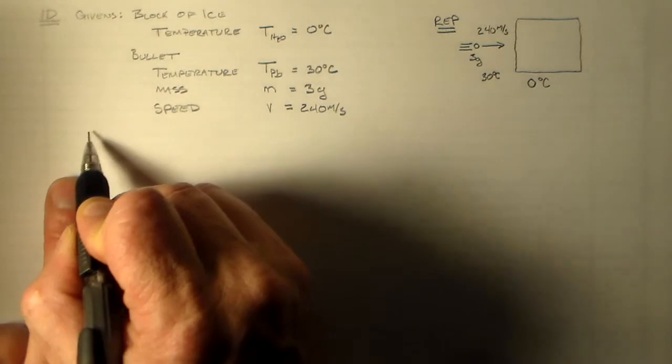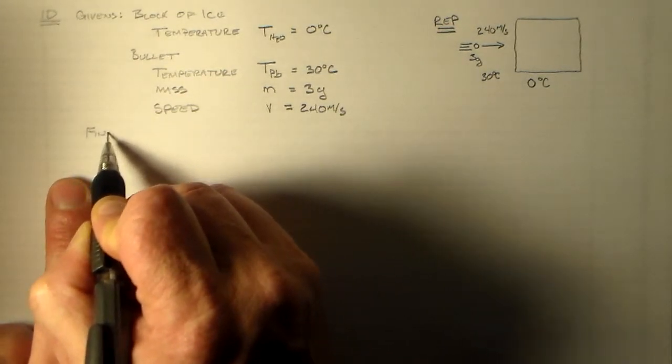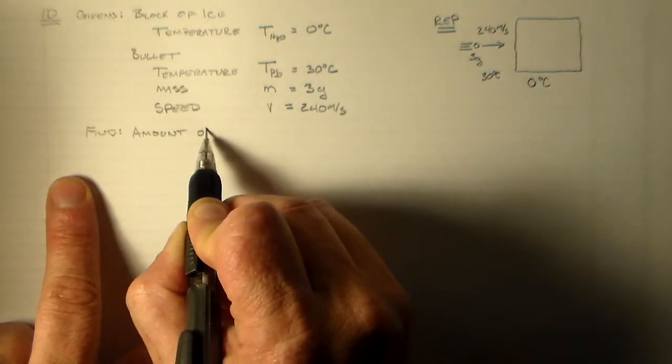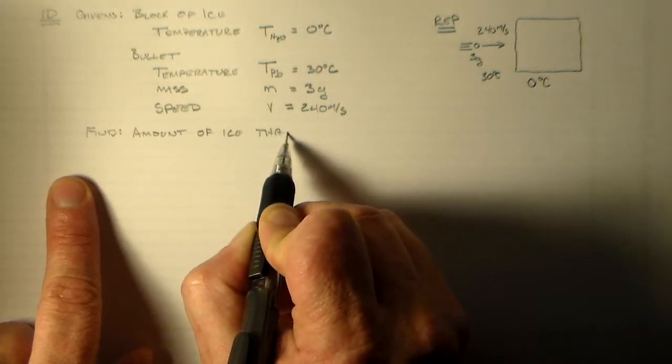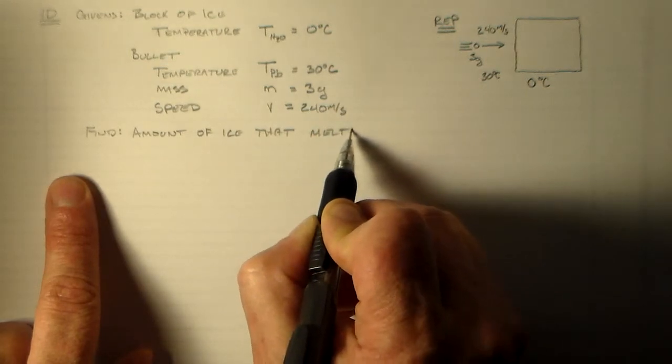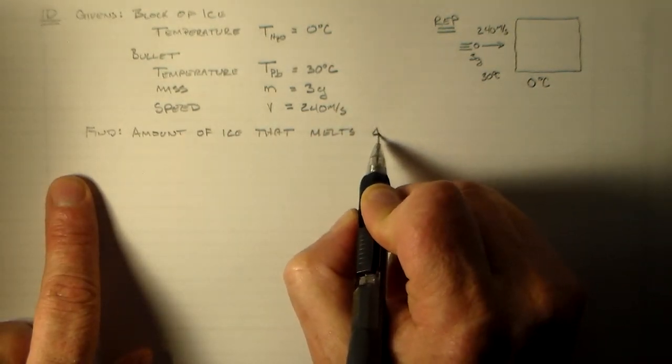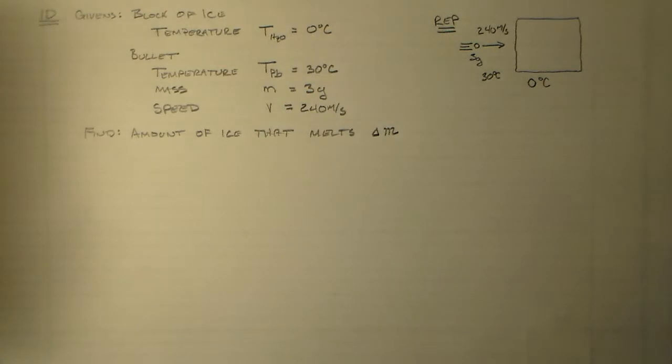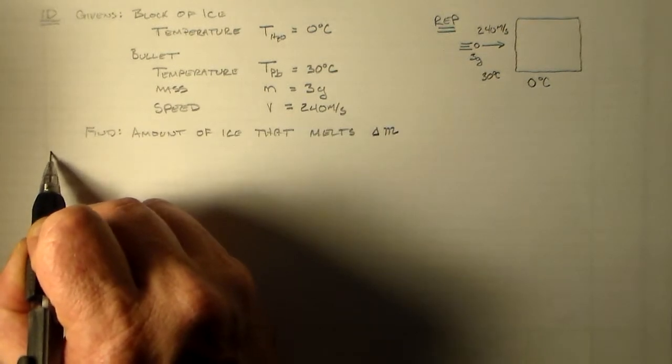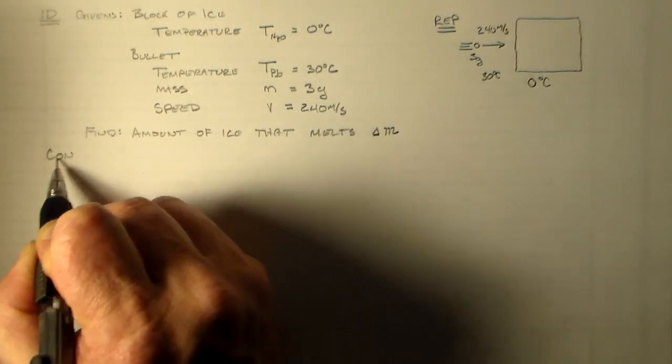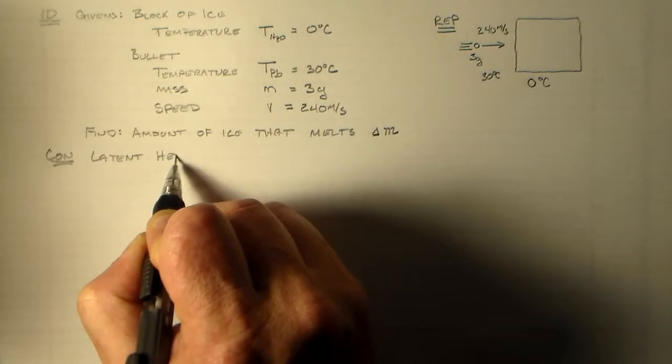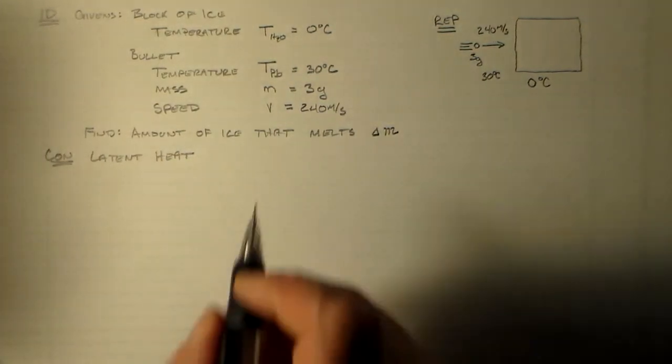And so then we need to find something. We want to find the amount of ice that melts. And so we're going to call that delta m. How much of the ice changes its phase from ice to water. So by saying that, it makes it fairly simple to figure out what the concept is. We want to talk about phase changes, we want to talk about latent heat, which is the easiest way to talk about phase changes.